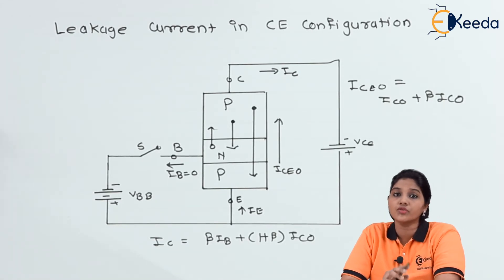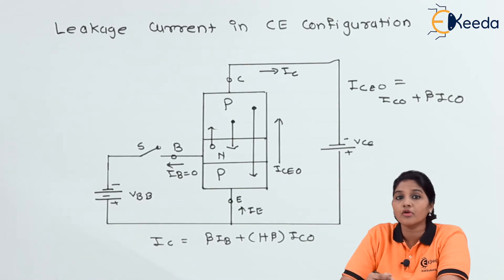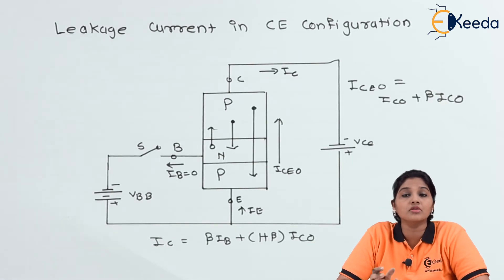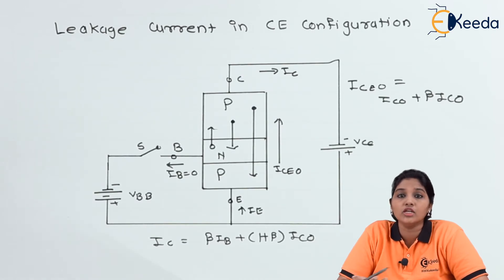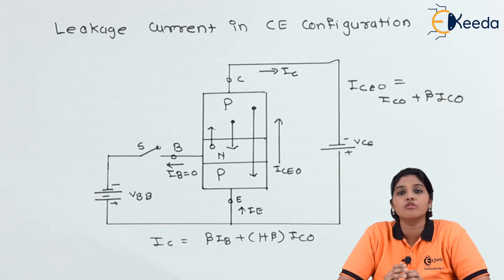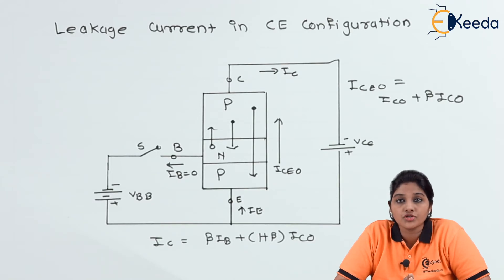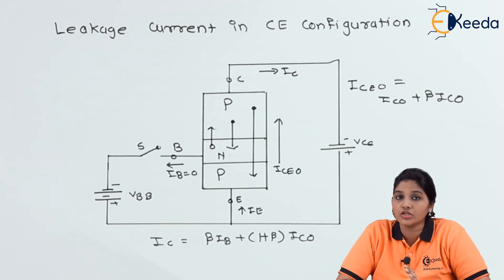From this equation, we can see that the collector current depends upon the value of beta, and the reverse saturation current depends upon the value of temperature. As temperature increases or decreases, it changes the value of reverse saturation current. For every 10 degree Celsius increase in temperature, the value of reverse saturation current doubles.